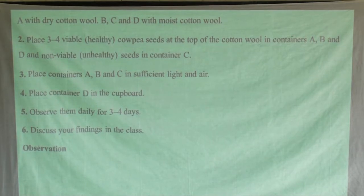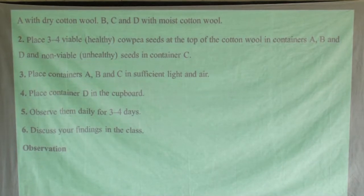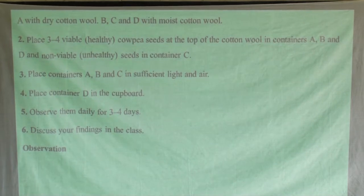Number two: we shall place three to four viable or healthy cowpea seeds on top of the cotton wool in containers A, B, and D, and non-viable or unhealthy seeds in container C.